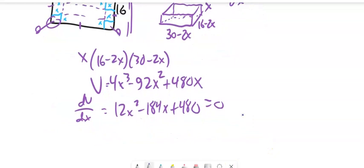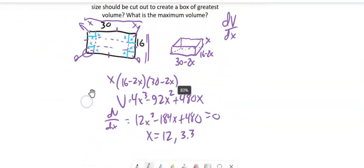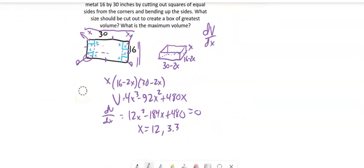I'm going to just run that through quadratic formula and I get x could be 12 or 3.3. And if I go back to my picture, x being 12 is ridiculous. If I cut out 12 in this direction and 12 in this direction I'm overlapping. I don't have anything left to fold up. So I'm going to throw that out.